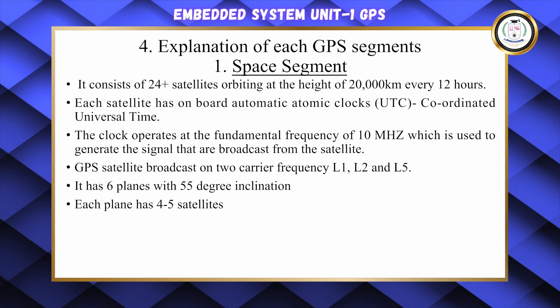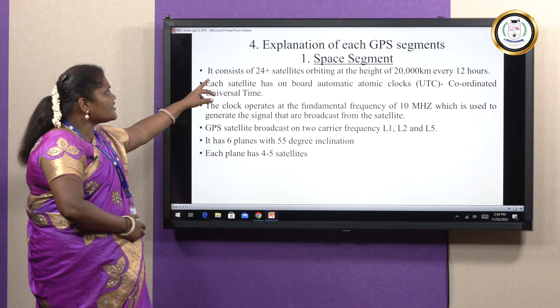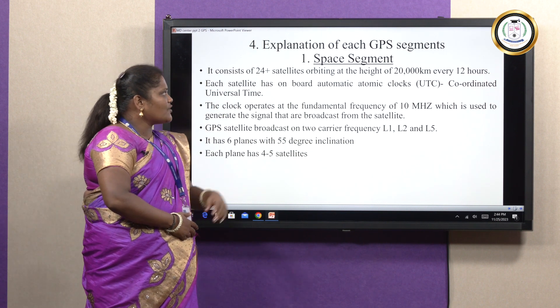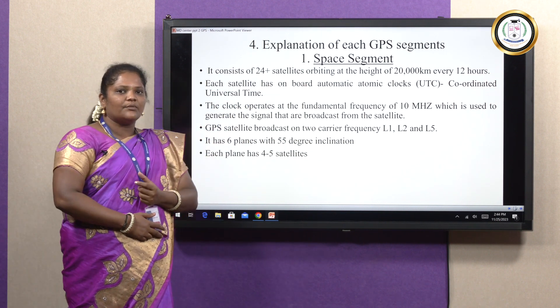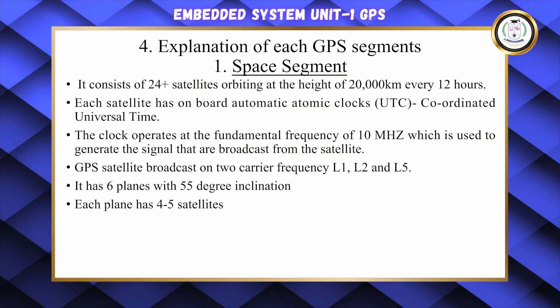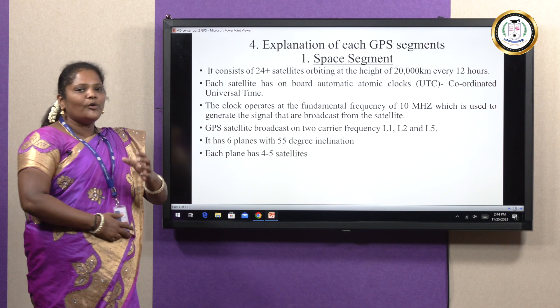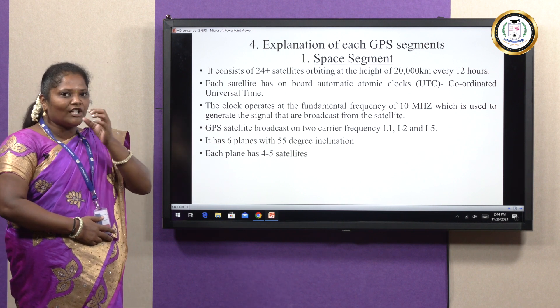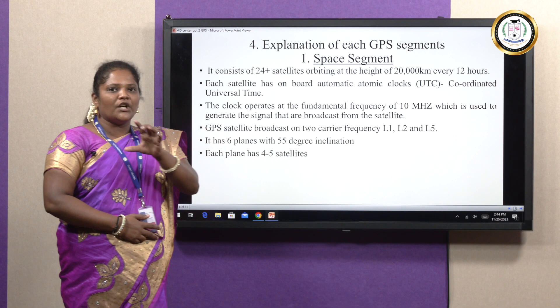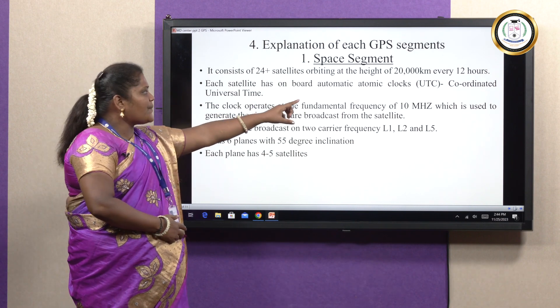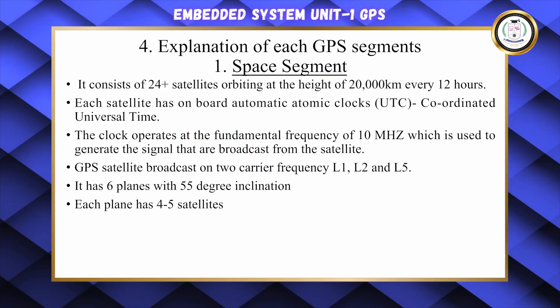The space segment consists of 24 plus satellites orbiting at a height of 20,000 kilometers every 12 hours. Each satellite has an onboard automatic atomic clock — UTC, which stands for Coordinated Universal Time. This is an important two-mark term.